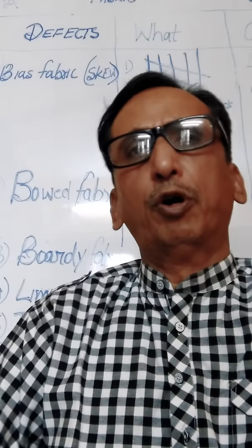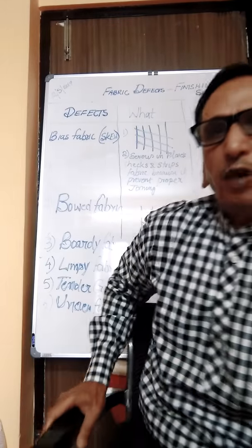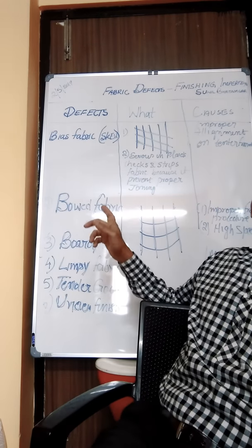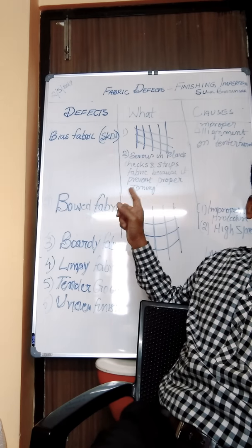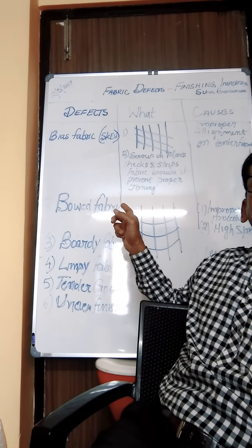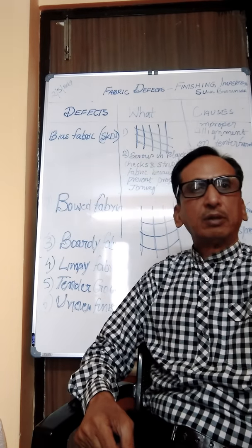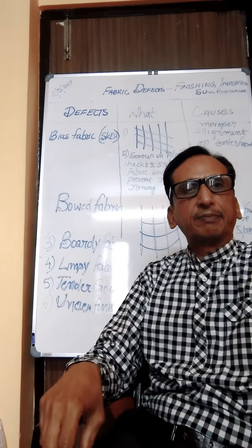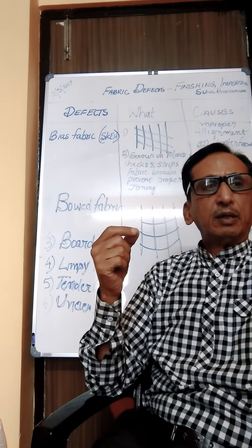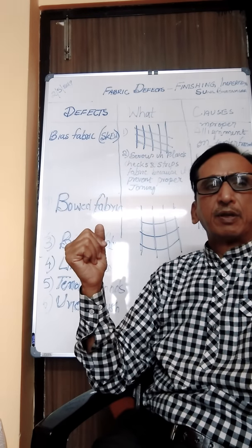Now, what are the finishing imperfections? As you can observe on the board, the first defect is called bias fabric. In bias fabric, the filling yarns are straight but not at right angles to the warp. It is caused by improper alignment of the tenter frame. As shown in the figure, the condition is especially serious in plaids, checks, and stripes fabrics.